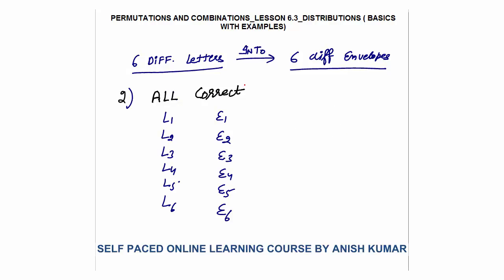Now the second question: 6 different letters posted into 6 different envelopes such that all letters go to the correct envelope. Correct means L1 goes to E1, L2 to E2, L3 to E3, L4 to E4, L5 to E5, L6 to E6. So there is only one way in which all letters can be posted in the correct manner.